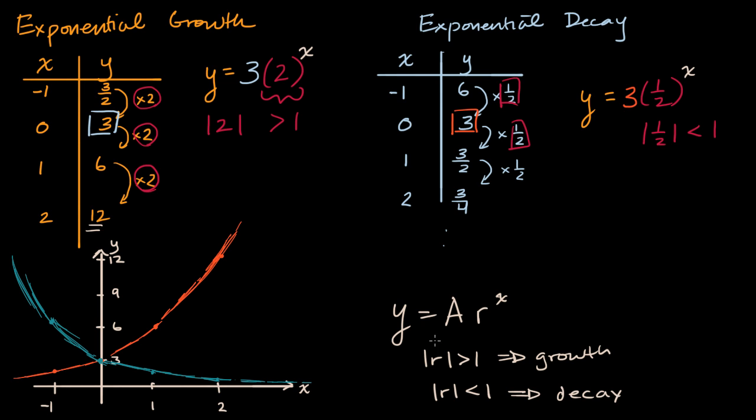And I'll let you think about what happens when r is equal to one. What are we dealing with in that situation? And it's a bit of a trick question because it's actually quite straight. Oh, I'll just tell you. If r is equal to one, well then this thing right over here is always going to be equal to one. And you boil down to just the constant equation y is equal to a. So this would just be a horizontal line.